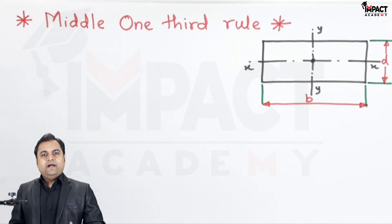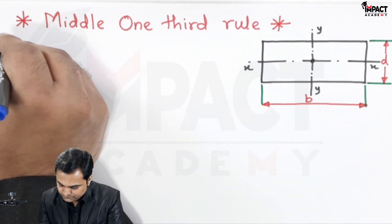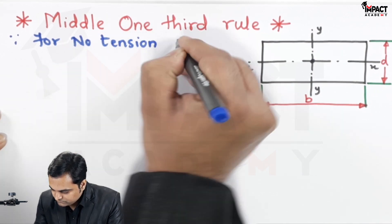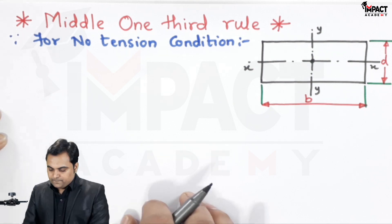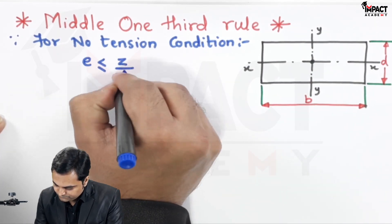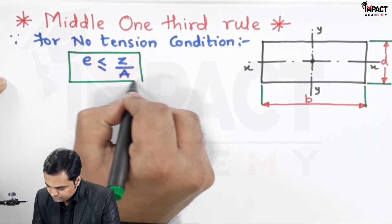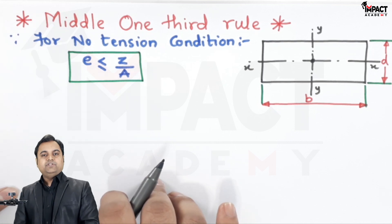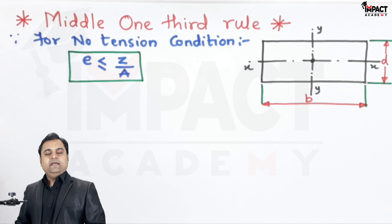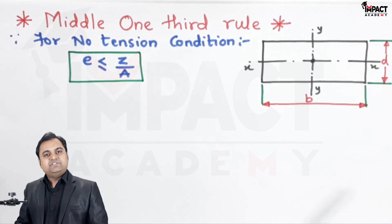I will start this middle one-third rule by using the no tension condition, which is e ≤ z/a. For how this relation comes, you can refer to my video where I explained the no tension condition.